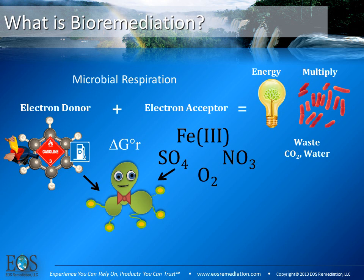For fuel contaminants, it's the electron acceptor that is limited. Several very common ones include sulfate, oxygen, nitrate, and iron. The debate is really about which of these electron acceptors is most appropriate to add to the system to promote biodegradation of your contaminants. That's what I'm going to cover in these next few slides.